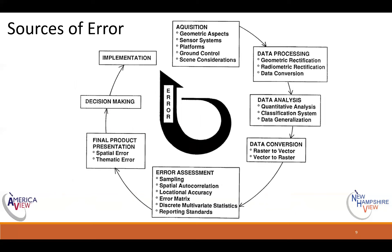Here's a quick diagram showing sources of error. When you start out, the errors are really small. As you go around the circle clockwise, errors tend to compound and get bigger and bigger. There are issues with acquisition of the imagery, data processing, analysis, raster-to-vector or vector-to-raster conversion, errors introduced in the assessment process itself, issues in the final product, and in the decision making and implementation. Doing some kind of uncertainty analysis and thinking about these errors ahead of time is really important. The more you can control those errors, the better off you're going to be.